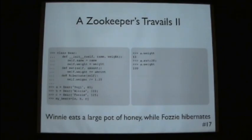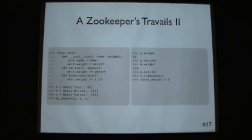In the same way, Winnie eats something, Fazi hibernates. And so we can now see if total weight is above 300. Same way. And we see that it's false. So we can't load the bears on.